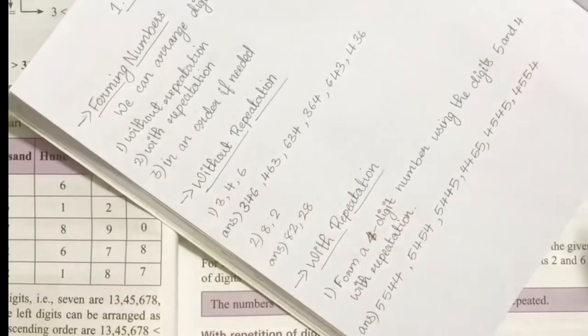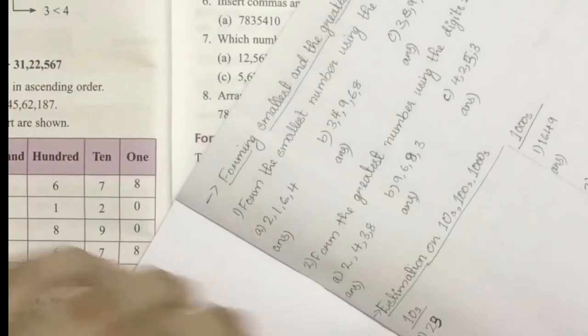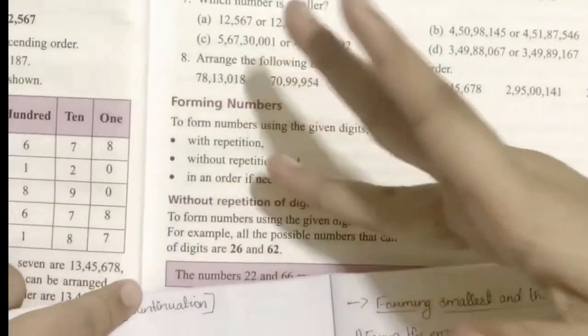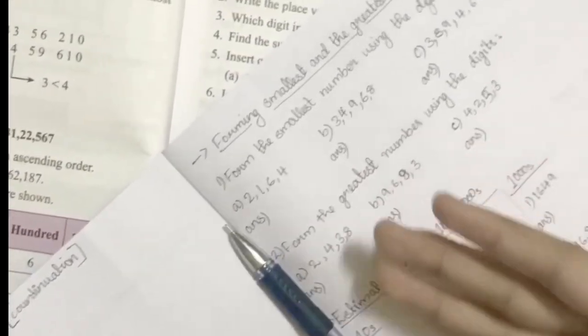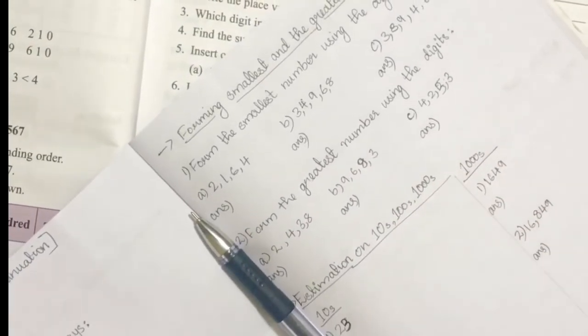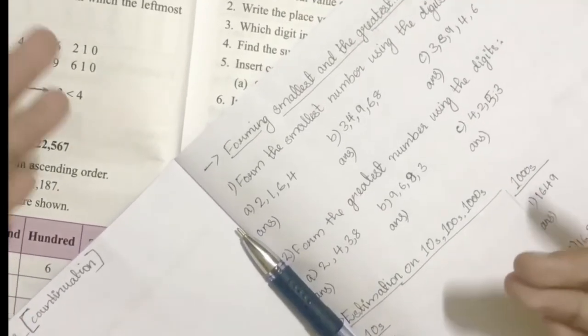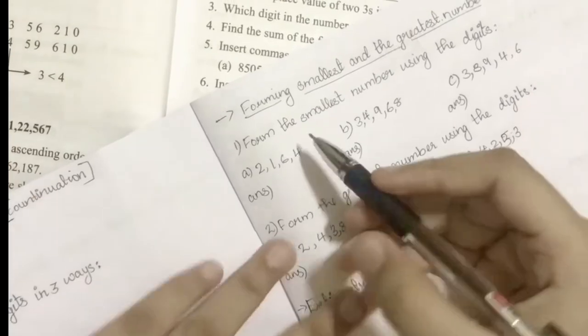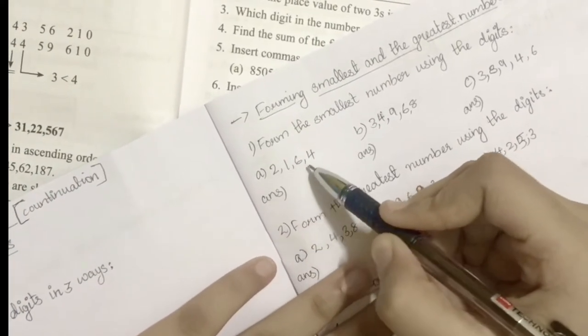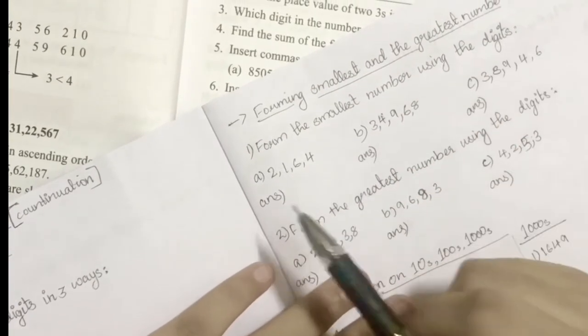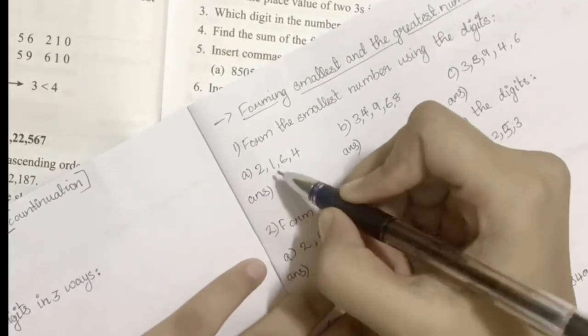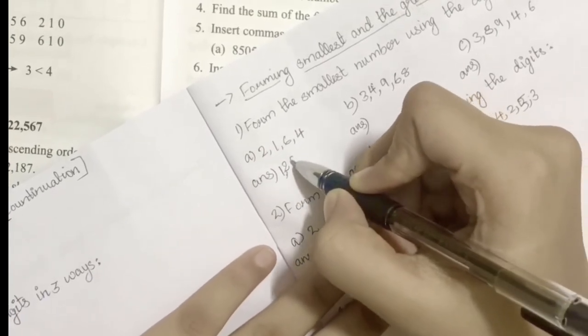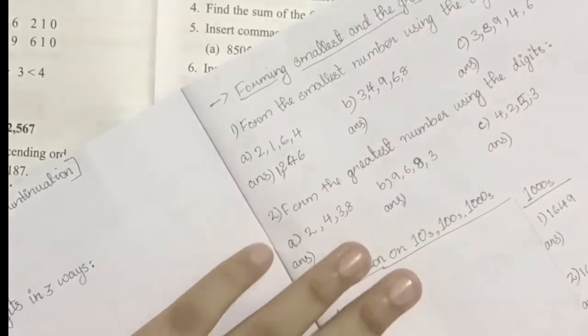The next thing is forming smallest and greatest numbers. They ask us to arrange in order if needed. If they tell us to form in an order, we can make the smallest or greatest number. The first digits are 0, 1, 6, 4. Form the smallest number using these digits. The smallest arrangement is 1, then 0, then 2, 4, and 6, so our first number is 1246.